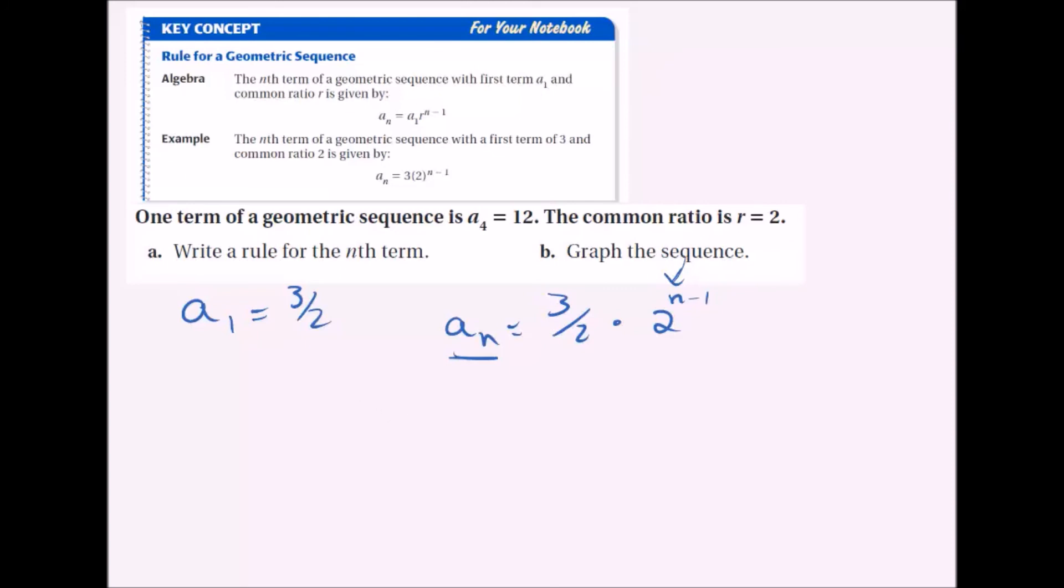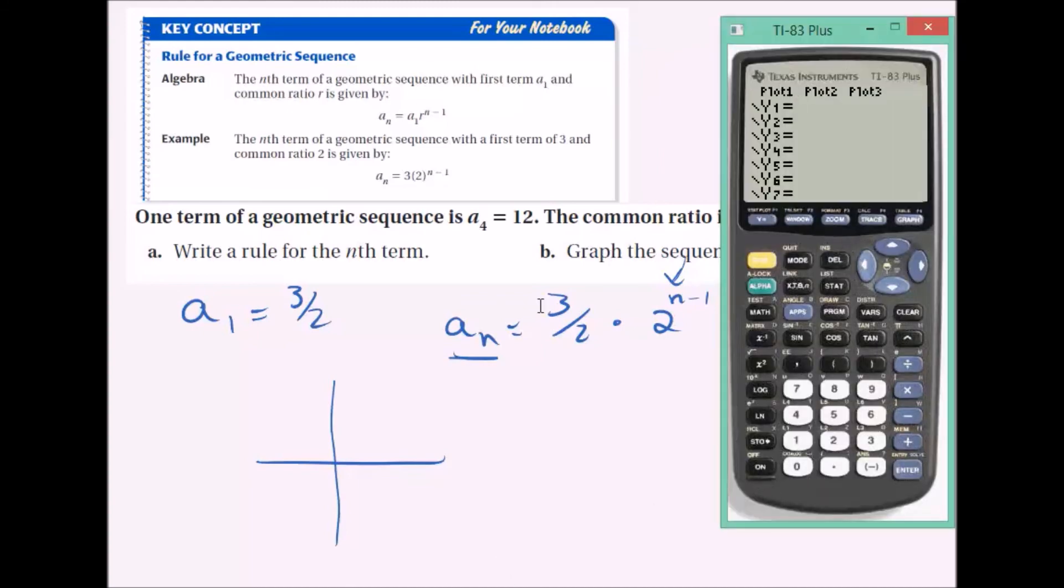So in order to graph it, we can use a graphing calculator quite easily. So we're just going to set it up. a_n is just y. So equals 1.5 times 2 to the x minus 1. We're just using x instead of n.